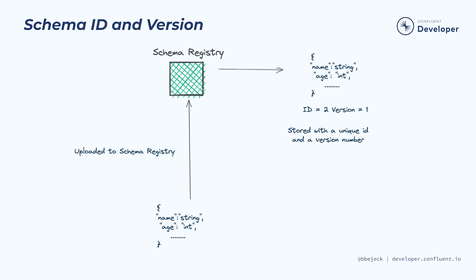The standard naming convention is the topic name followed by key, or the topic name followed by value, depending on whether you're defining a schema to be used for a key or a value. It doesn't just end there, though — there are some other strategies for subject names that we'll cover in a later session.